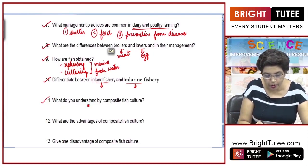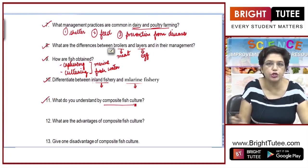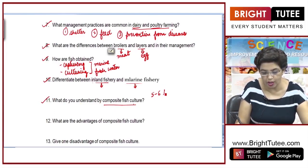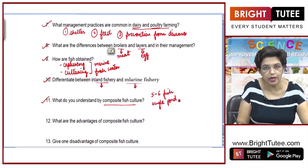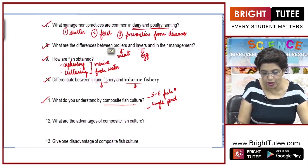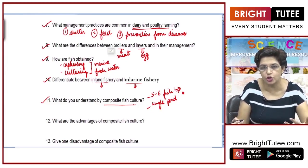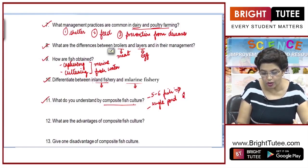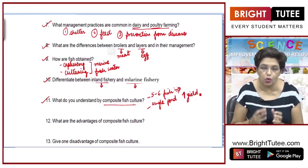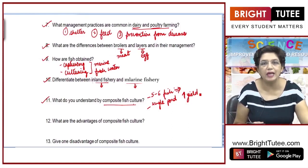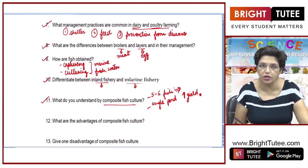Next question: what do you understand by composite fish culture? In composite fish culture, 5 to 6 varieties of fish are selected and cultured in a single pond. The selection is such that they should not compete with each other for food. Overall, the yield will increase — from a single pond we get more quantity of fish because they grow in different layers of the pond.